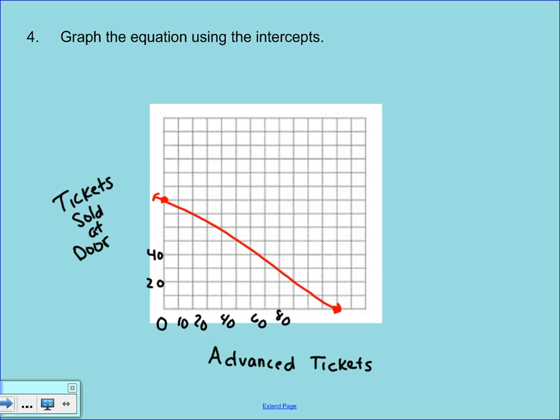But then what this represents, this line gives us all possibilities. So you can find another point on the line. And that would show you like, hey, when we bought 50 tickets ahead of time, that meant that 50 tickets were sold at the door. So you can kind of look at the breakdown then according to your line.